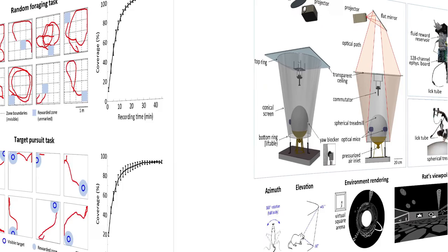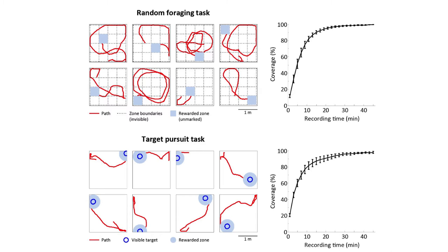Dimitri found it relatively straightforward to train animals to do tasks normally done in real environments. For example, in a random foraging task, instead of sprinkling chocolate drops in a real environment, Dimitri trained the rat to navigate to invisible targets within the virtual environment. If the animal entered that zone, it received a water reward through a tube within licking distance. There was also a target pursuit task. The question then was: are head direction cells, grid cells, and place cells actually active and engaged in this task?